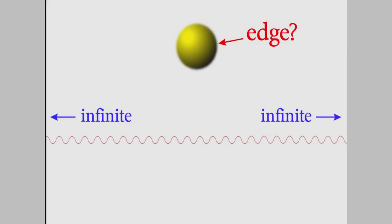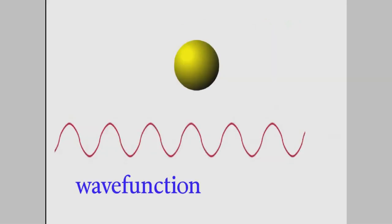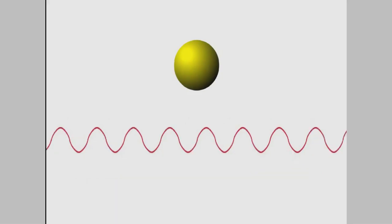Well, the wave that describes a particle is called a wave function. And it turns out that the height of a wave function, which we call its amplitude, tells us how likely it is we'd find the particle at any particular point. So we're more likely to find the particle where the wave function has a high amplitude.